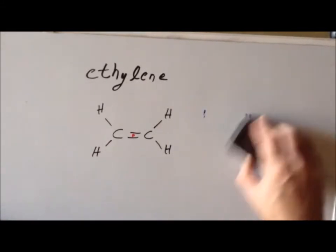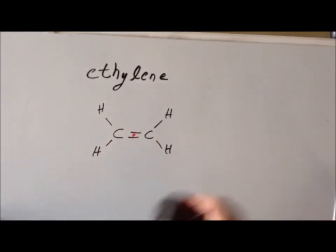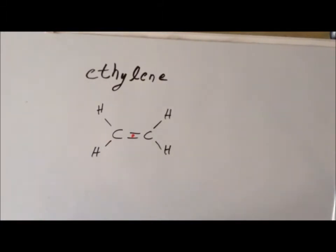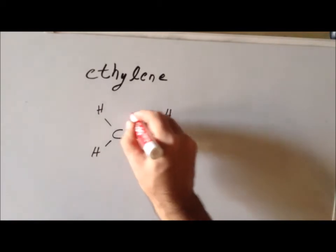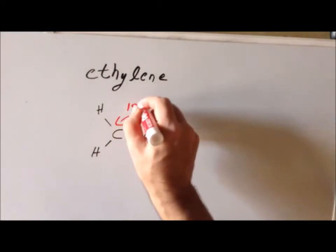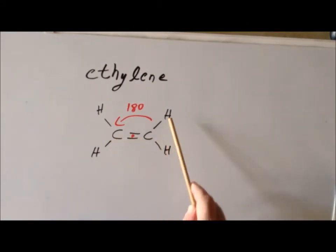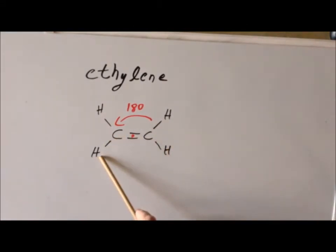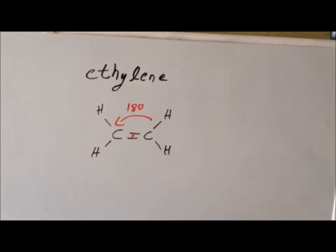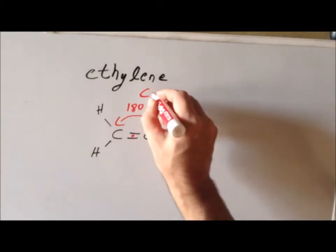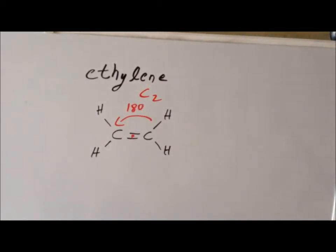Does ethylene have any interesting high-order rotation axes? Yes. If we rotate by 180 degrees, the effect is to swap the two carbon atoms, and each hydrogen maps onto another hydrogen. So this molecule does have a C2 rotation, and it is a rotation in the plane of the board.